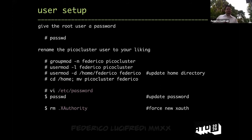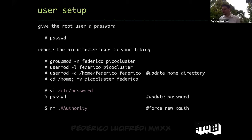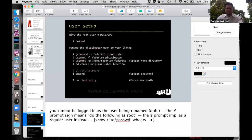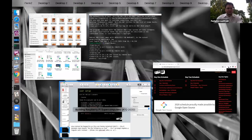In these slides, a pound sign (#) at the beginning of a line means it's a root user prompt, while a dollar sign ($) implies an unprivileged user. This way you can see at a glance whether a command requires root permissions.